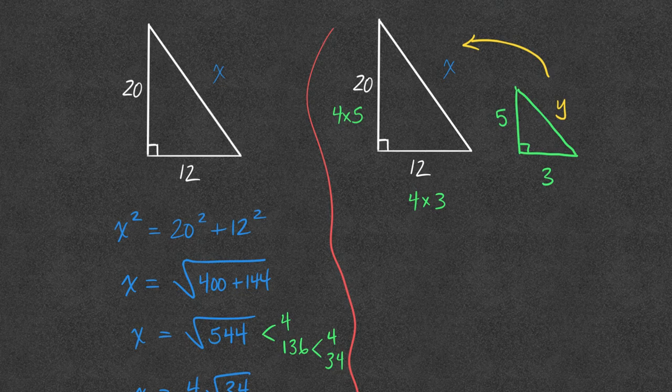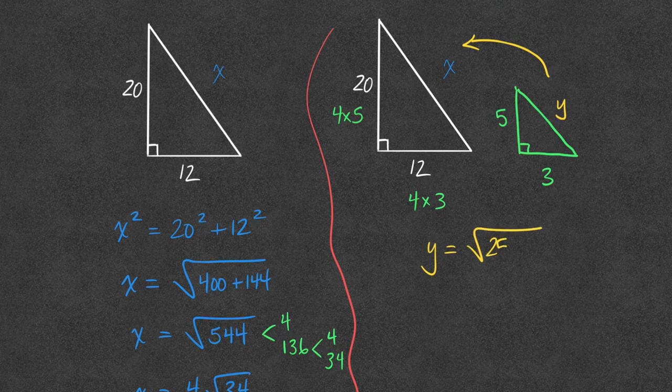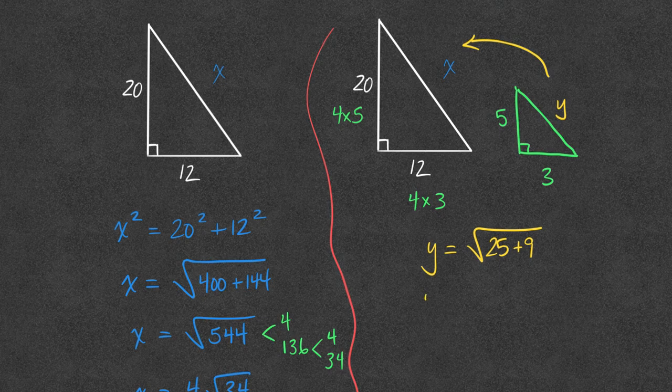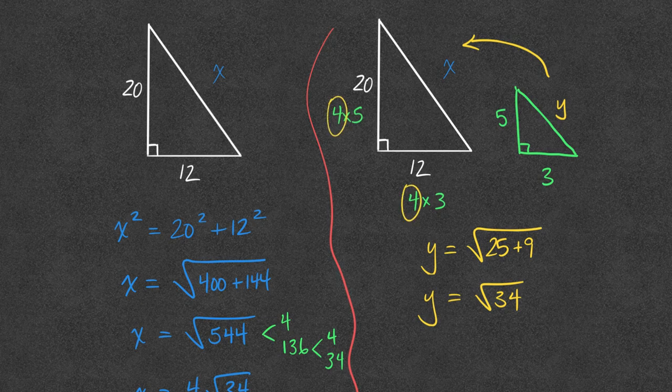Pretty quickly then, I know that y is going to be the root of 25, 5 squared, plus 9, 3 squared. y is going to be the root of 34. But now that I look back at that triangle, remember, they each had a common factor of 4.